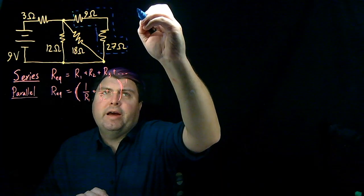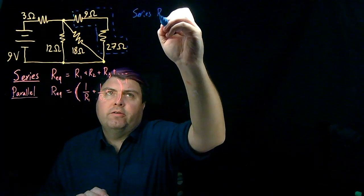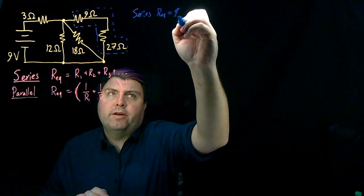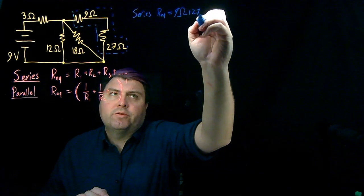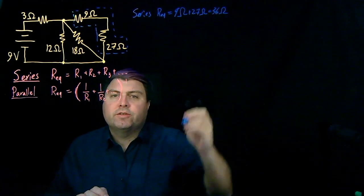So we have a series, and our equivalent would then be 9 ohms plus 27 ohms, which is 36 ohms.